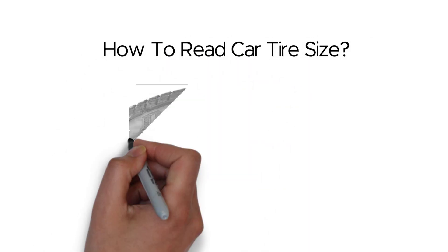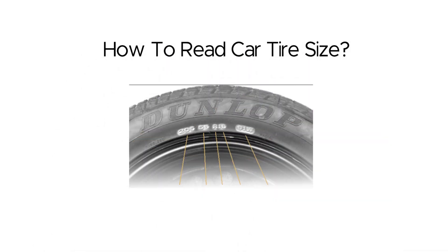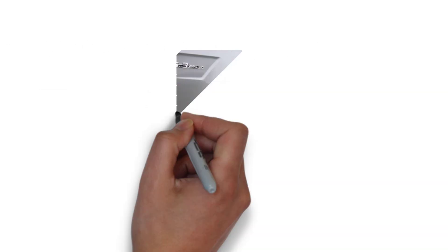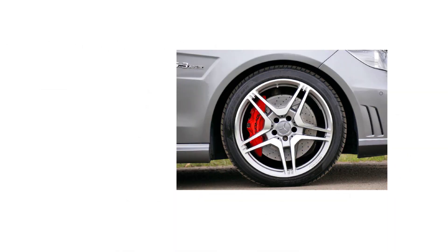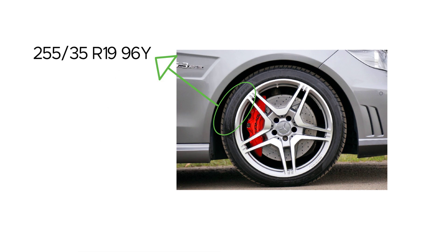How to read car tire size. The sidewall of your tire contains important information that helps you understand its size. It is indicated by a series of numbers and letters. For example, a common tire size might be represented as 255/35 R19 96Y. Let's delve into how to read this tire size.